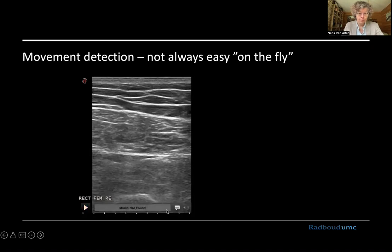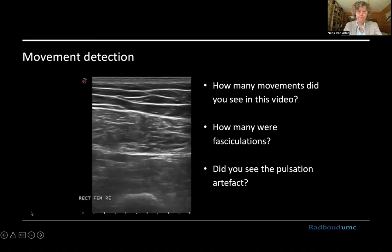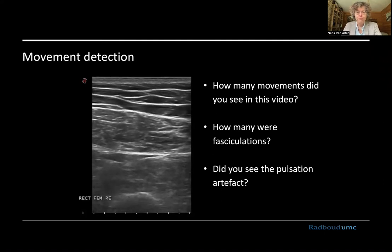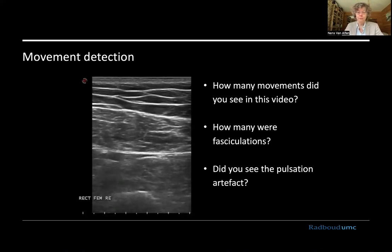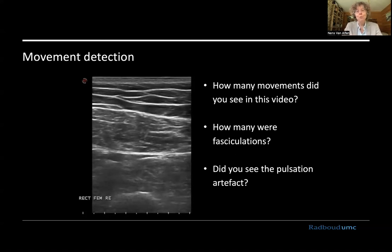But it's not always easy on the fly, as this video will show you. Just try to figure out for yourself: how many movements do you really see in this video, and how many of those were fasciculations? Are you seeing the pulsation artifact here? This is a 30-second segment, and you can imagine that if you have a one- or two-minute fragment, it becomes a real strain on the brain to remember everything going on. There's no prize for the actual number of movements, but this shows the concept that it's difficult for us to manage this at just one glance.